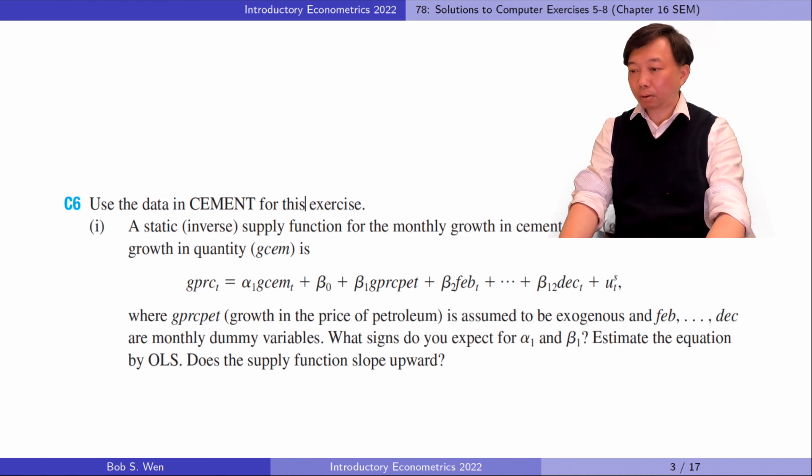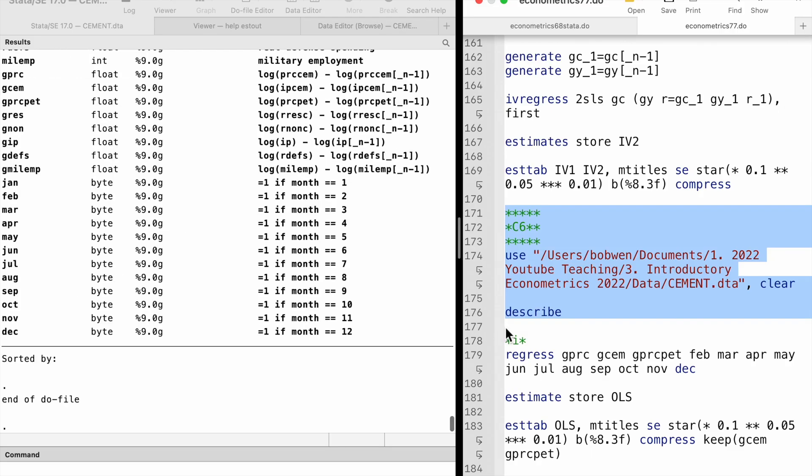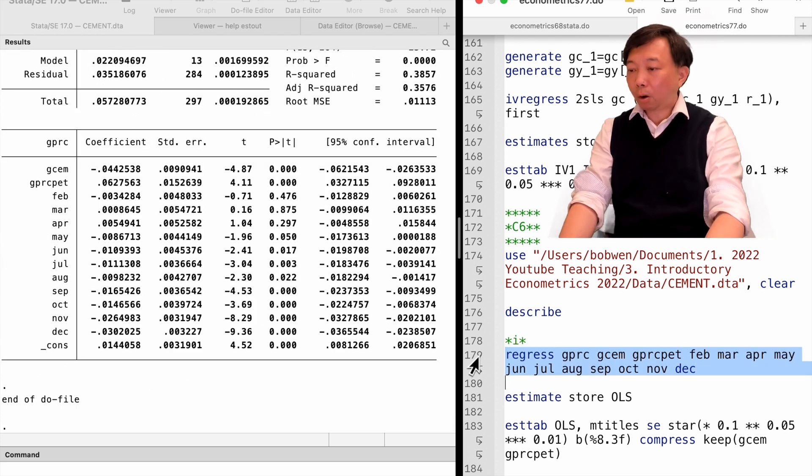According to the supply law, other things equal, the supply of cement increases as its price increases. Alpha 1 should be positive. If we see petroleum as a source to make cement, their prices should move in the same direction. Beta 1 should be positive. The OLS estimate of alpha 1 is minus 0.044. The fitted supply does not slope upward.